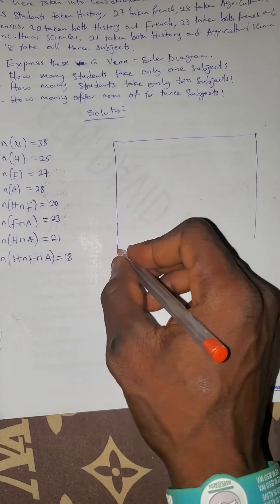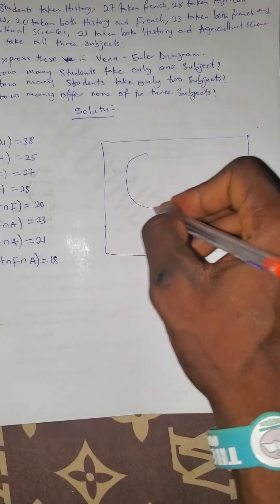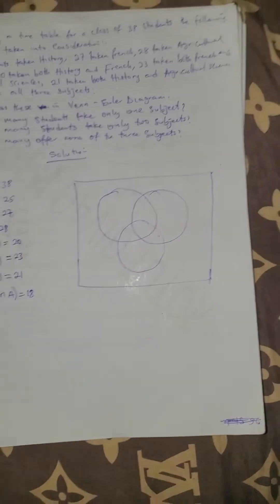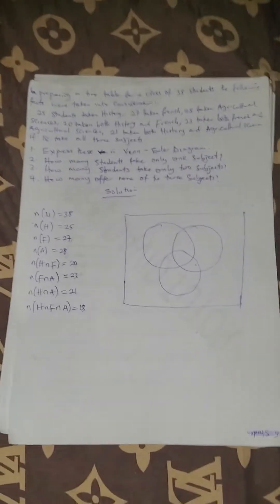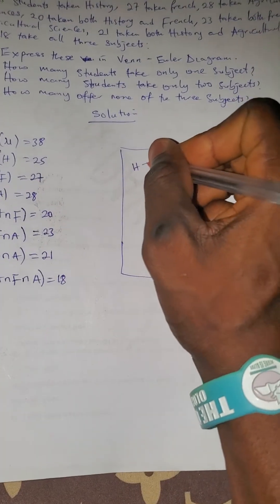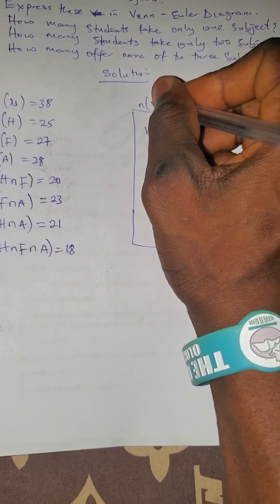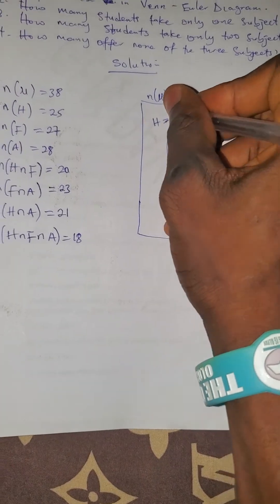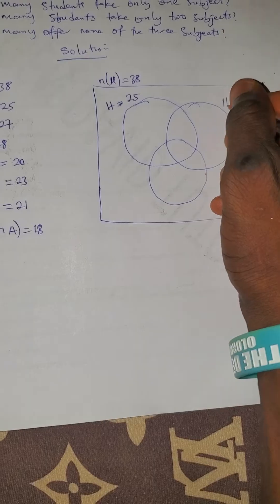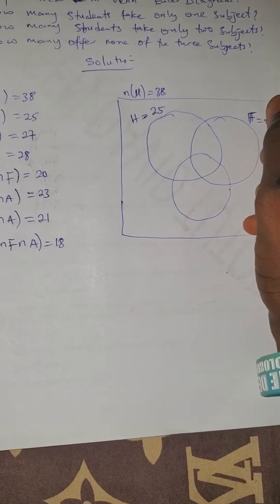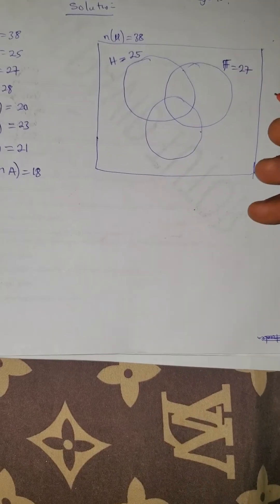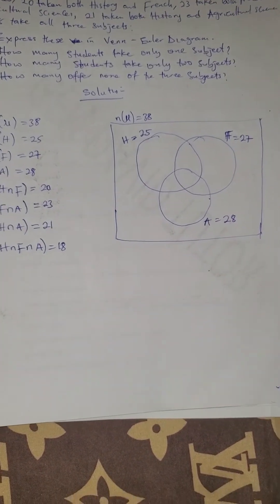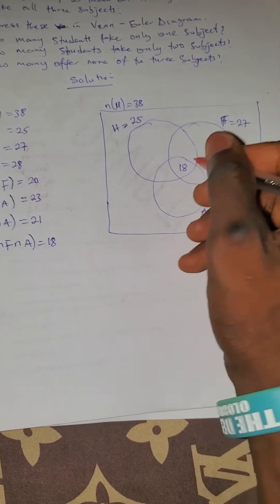We draw three overlapping circles for the Venn diagram. We place History here, with the total universal set being 38. History has 25 students, French has 27, Greek has 28, and those that study all three subjects is 18, placed at the center.